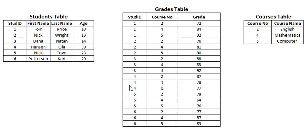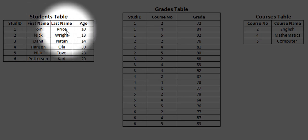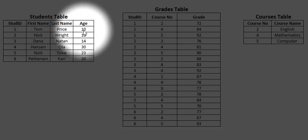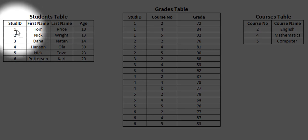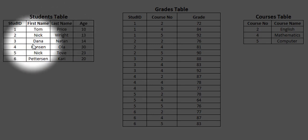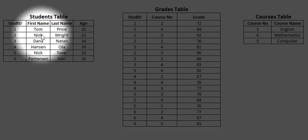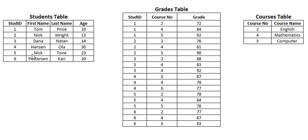We are here in Excel and we have three tables: the students table, the grades table, and the courses table. In the students table, we have four fields, and each record is a distinct record for the students in the school. We have student ID one — Tom Price, age 10 — then student ID two — Nick Wright — and so on. One important thing: this student ID is not supposed to repeat. Two students shouldn't have the same ID. They can have the same name, but their student ID should be distinct for each student.